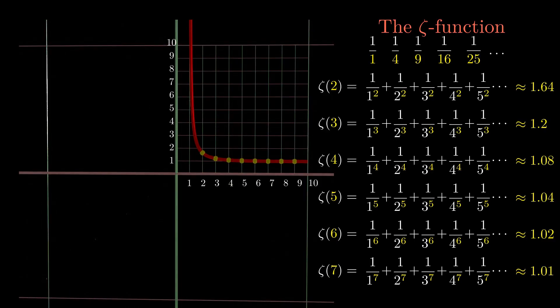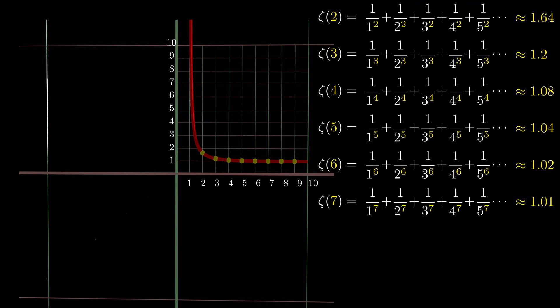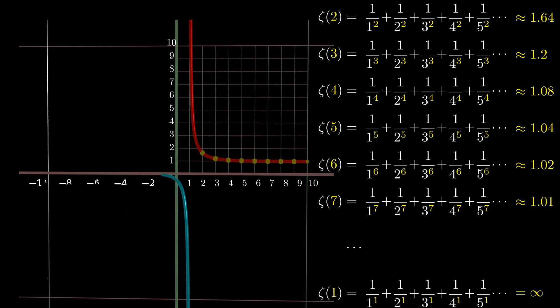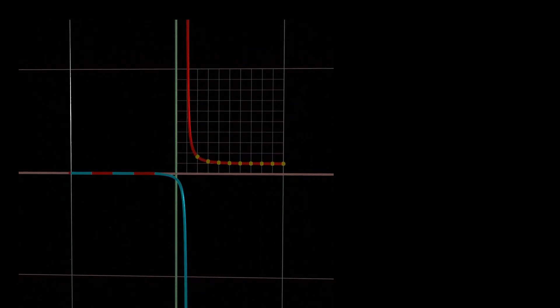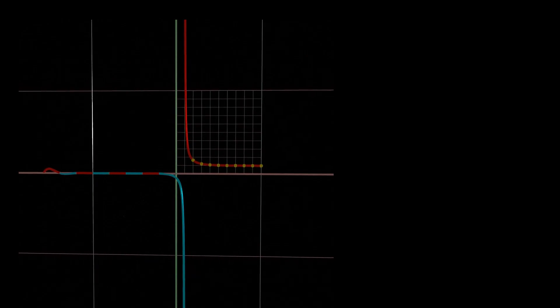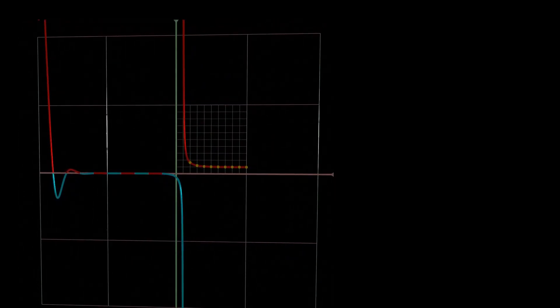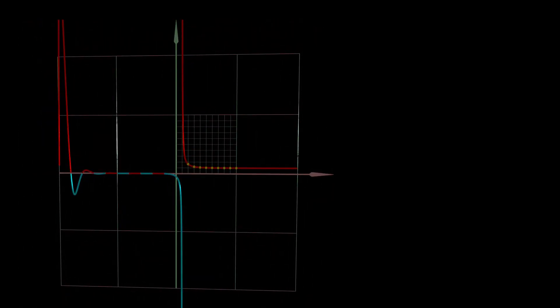However, when the input value gets closer to 1, zeta grows without limit, which reflects the property of the diverging harmonic series. Up to this point, zeta looks rather boring and there is no sign of primes visible so far. It is possible to extend zeta beyond the singular point at 1. One finds a function that oscillates around the x-axis. The axis is crossed at all even negative integers, the so-called trivial zeros of zeta. The amplitude of oscillation grows rapidly.